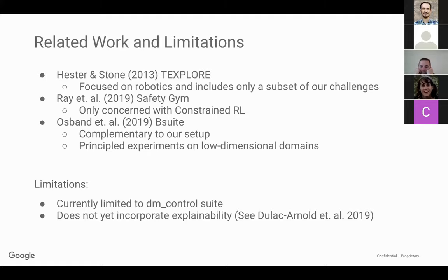Offline RL is really cool because it opens up a lot of doors in terms of actually running RL on real systems where you just have some data and people want a policy but you can't randomly explore. We're just seeing the beginnings of that - a lot of these papers are one or two years old. Constraint-based RL is really important too - if you want to run real systems, you can't have it do crazy stuff. I've heard stories of motors catching fire on robots just because the algorithm is overactuating.